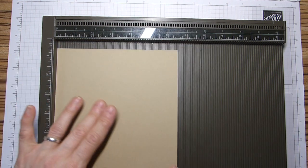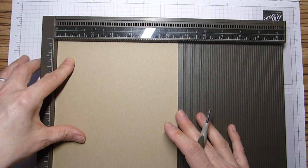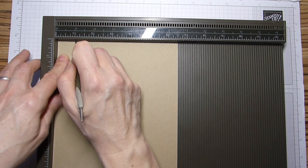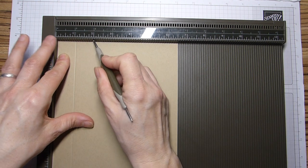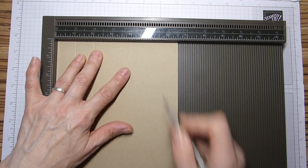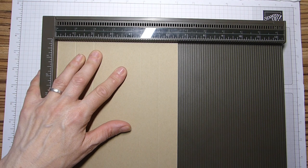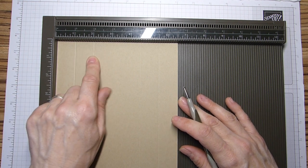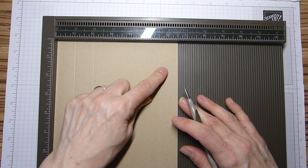On the short side, we're going to score at one, two, four and a half and five and a half, which will be two and a half, five, 11 and a half and 14 in centimetres.